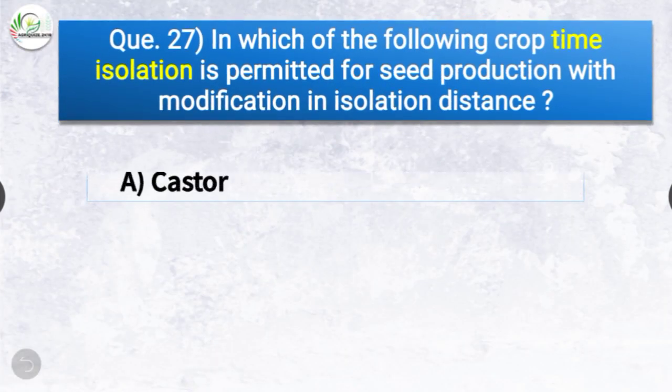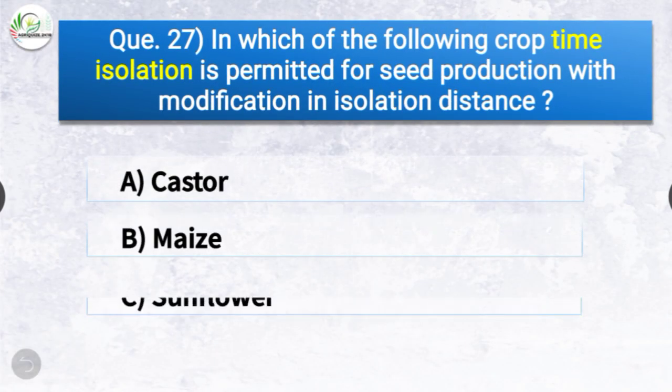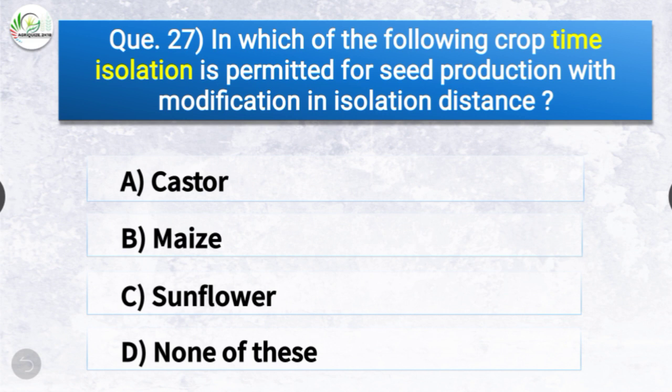Question number twenty-seven: In which of the following crops is time isolation permitted for seed production with modification in isolation distance? The options are castor, maize, sunflower, or none of these. The correct answer is option B — maize. In maize, time isolation is permitted for seed production with modification in isolation distance.